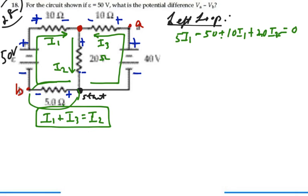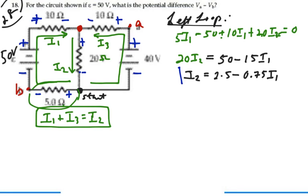Let's solve this for I2 in terms of I1. So we have 20 I2 is equal to 50 minus 15 I1. So I have I2 is equal to 2.5 minus 0.75 I1. That's my first equation. It gives me I2 in terms of I1.